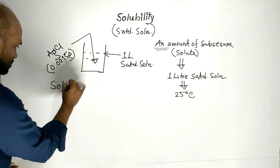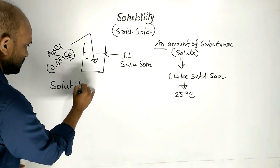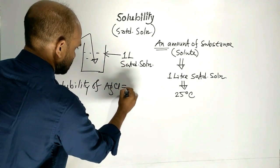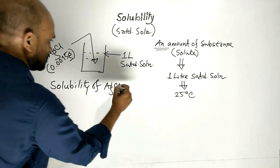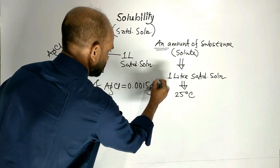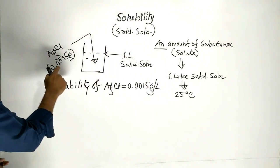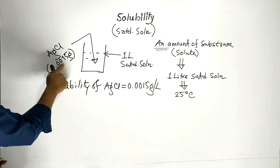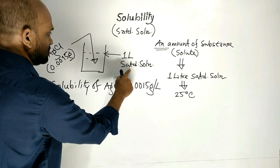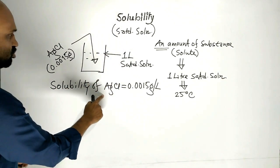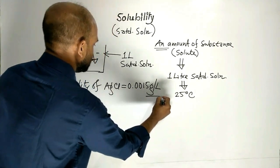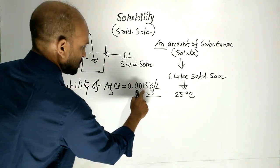Then, solubility of silver chloride will be 0.0015 gram per liter, because this amount of silver chloride is used to make 1 liter saturated solution. That is why, solubility of silver chloride is 0.0015 gram per liter. The unit of solubility is gram per liter.